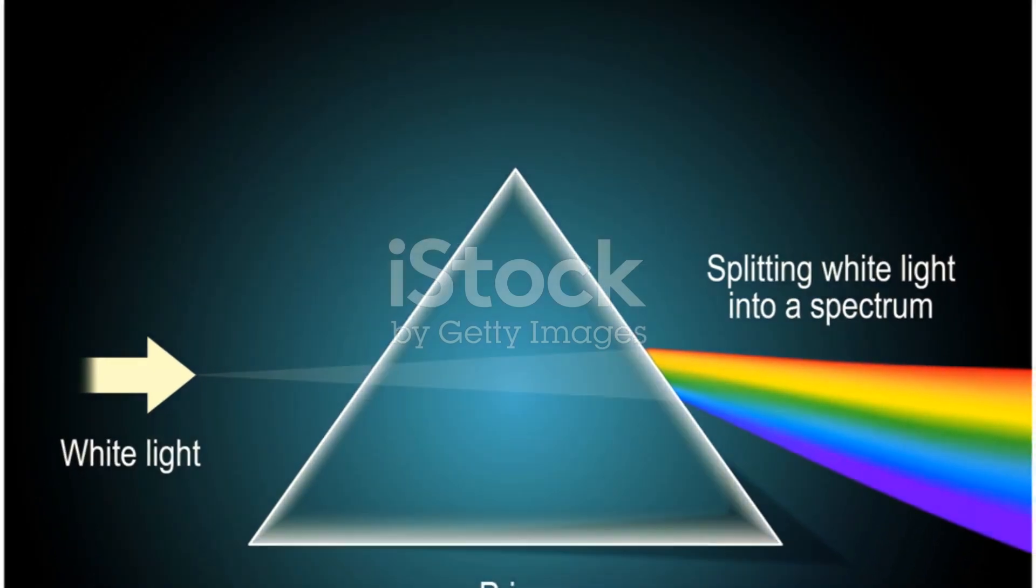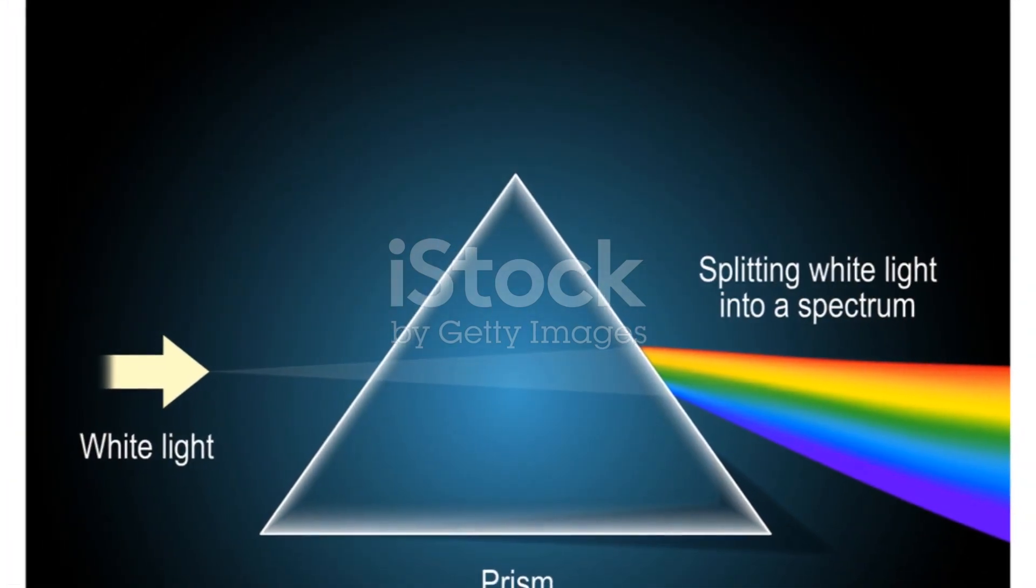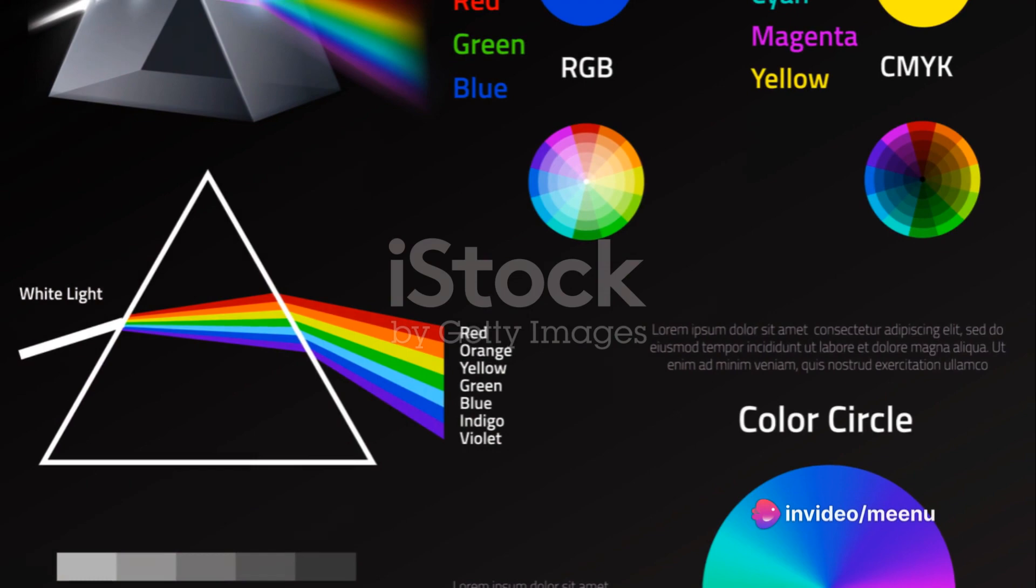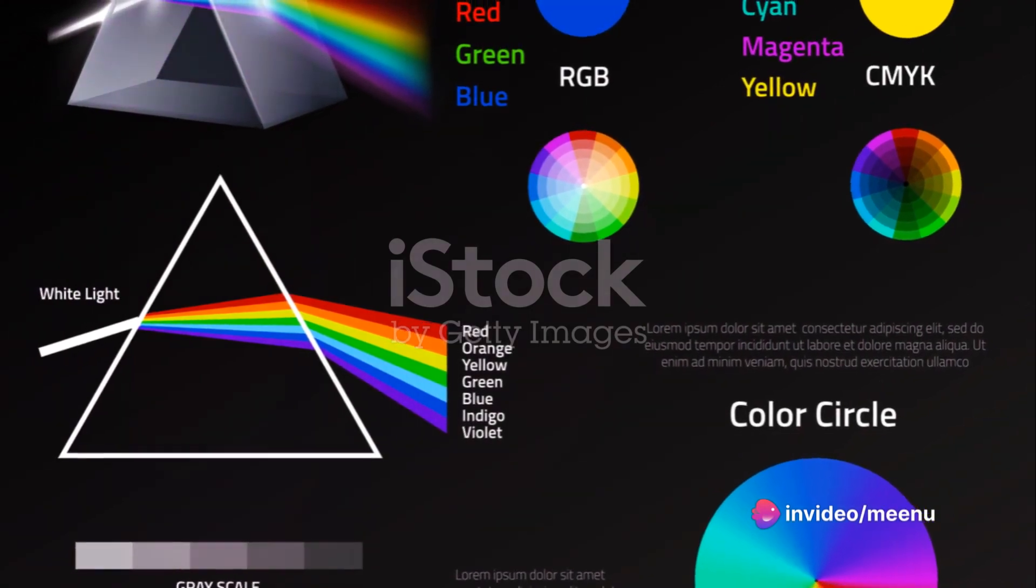When white light passes through the prism, it's not just white anymore. See how the prism separates white light into a beautiful spectrum of colors like a rainbow?